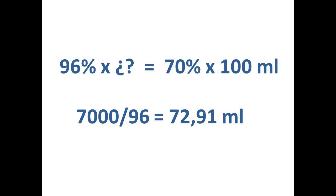We just need to add the rest. It means 27 ml of water to this alcohol 96% and we will have it in 70%. How we do it?